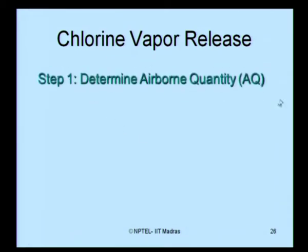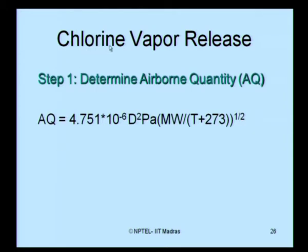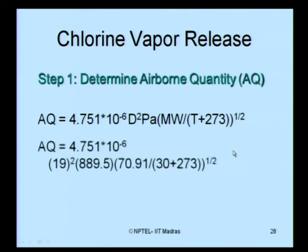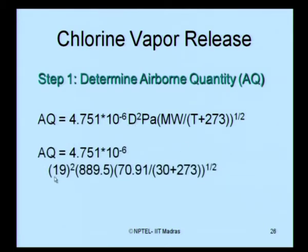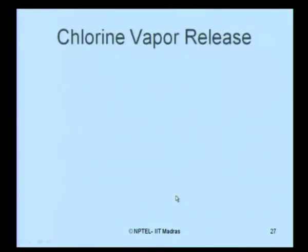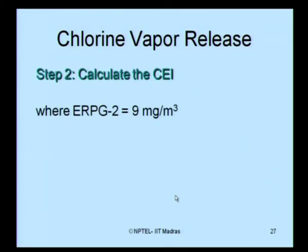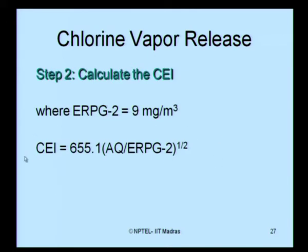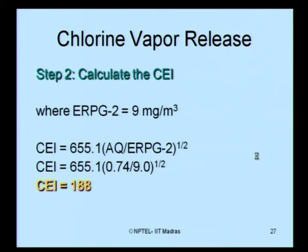In Step 1, we estimate the airborne quantity for a chemical vapour release using the standard equation. Substituting D = 19 mm, P absolute = 889.5 kPa, molecular weight = 70.91, and ambient temperature gives AQ = 0.74 kg per second. In Step 2, we compute CEI. For chlorine vapour, ERPG 2 from literature is 9 mg per cubic meter. Using the standard CEI equation, we get CEI = 188.